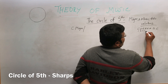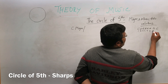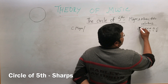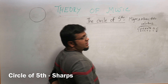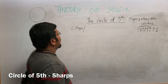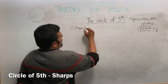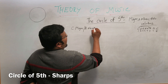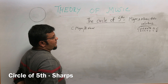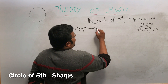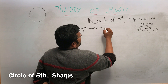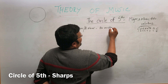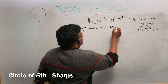Counting the notes: one, two, three, four, five, six, seven, eight. The sixth note is called the relative minor of C major, so that is called A minor. It has no sharps or flats.